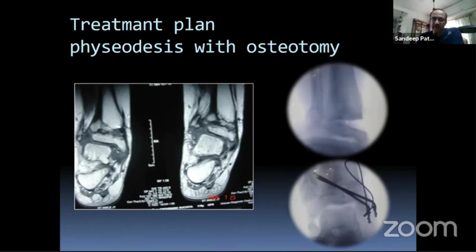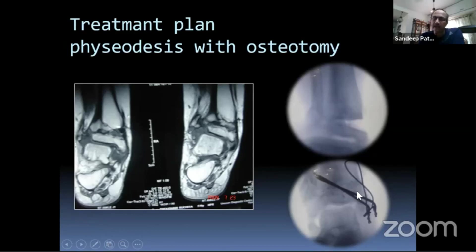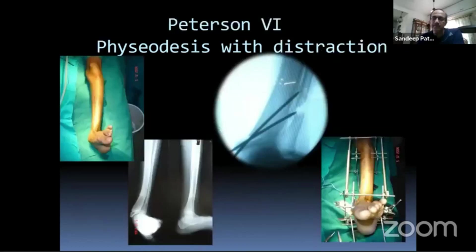I went in through the medial side, scraped out whatever remaining physis was there, and used that as an osteotomy and closed it. I got an acute deformity correction and a permanent epiphysiodesis. Now I can deal with the distal shortening — about three millimeters per year — and depending on the age I can lengthen at maturity. Simpler options can sometimes be used.